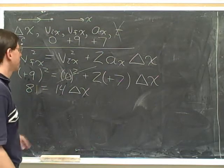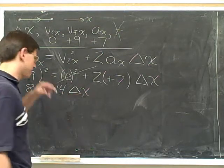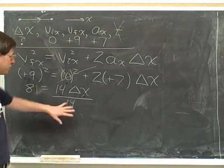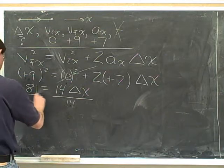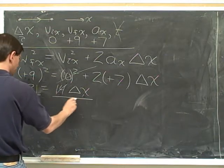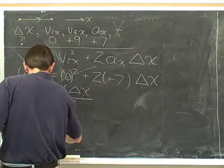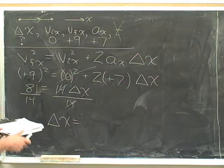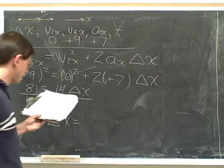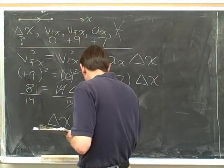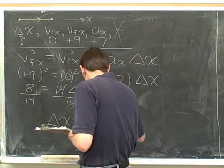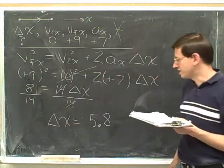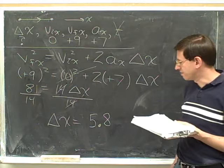Well, do the opposite. The 14 is being multiplied times the delta x. The opposite of multiplication is division, and we have to divide both sides. All right, and then we can get out our calculator, and we'll find that 81 divided by 14 is approximately 5.8. 81 divided by 14 on the calculator is approximately 5.8.